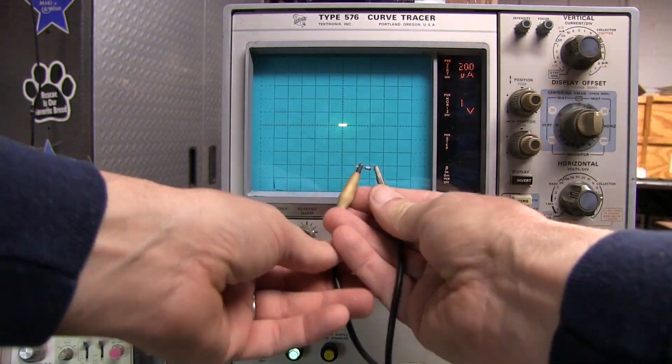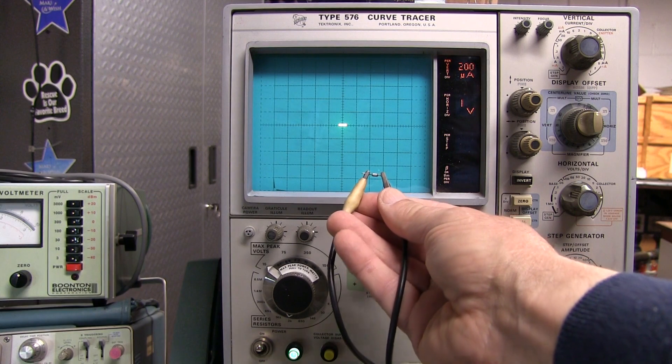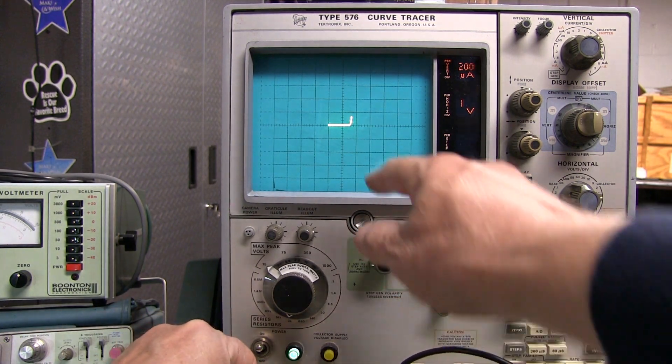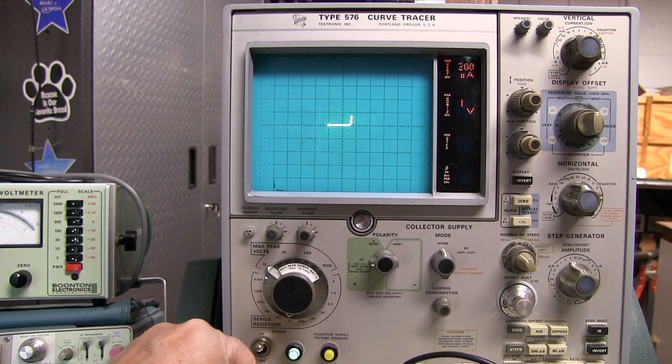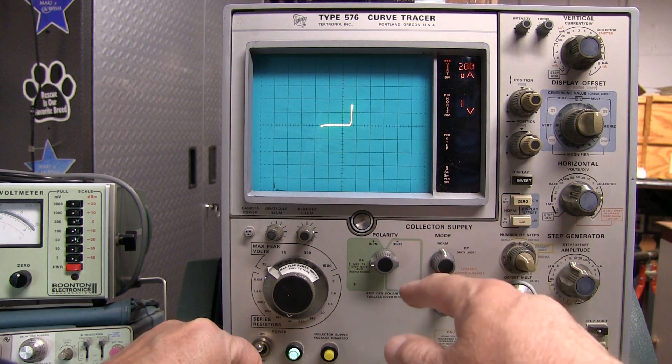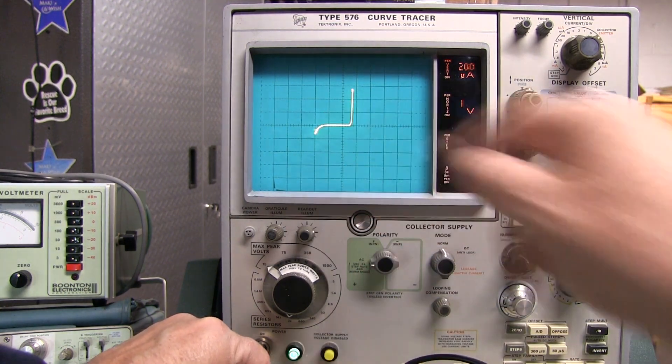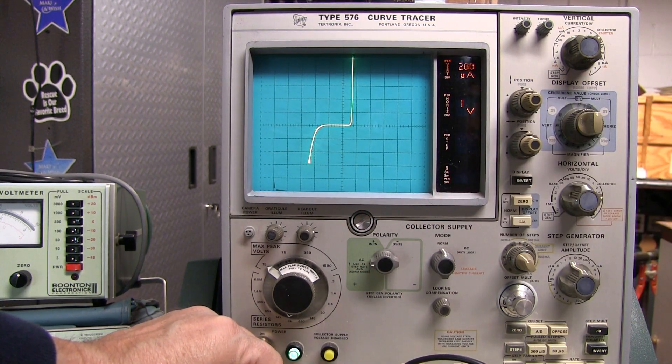You're going to play with that vertical scale. Here's a little 3.9 volt zener diode. As we turn the voltage up, we can see the normal forward bias condition. As we keep increasing the voltage, we start to see the zener breakdown for the zener diode operation.